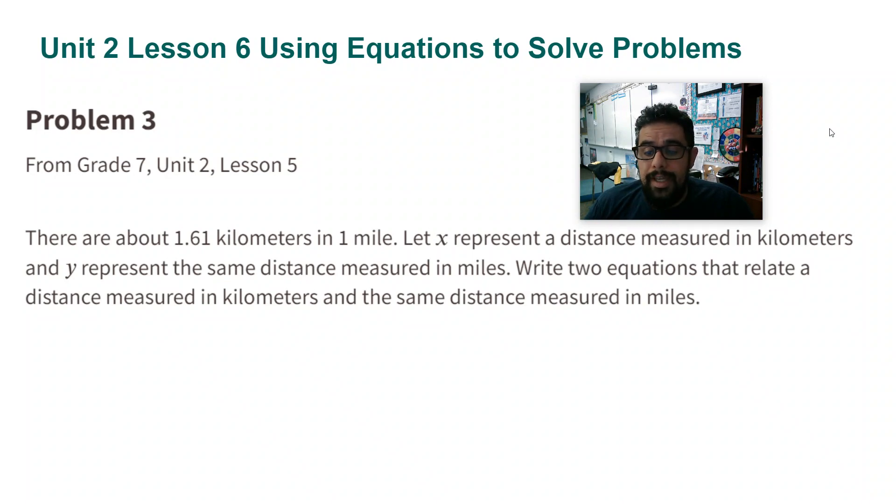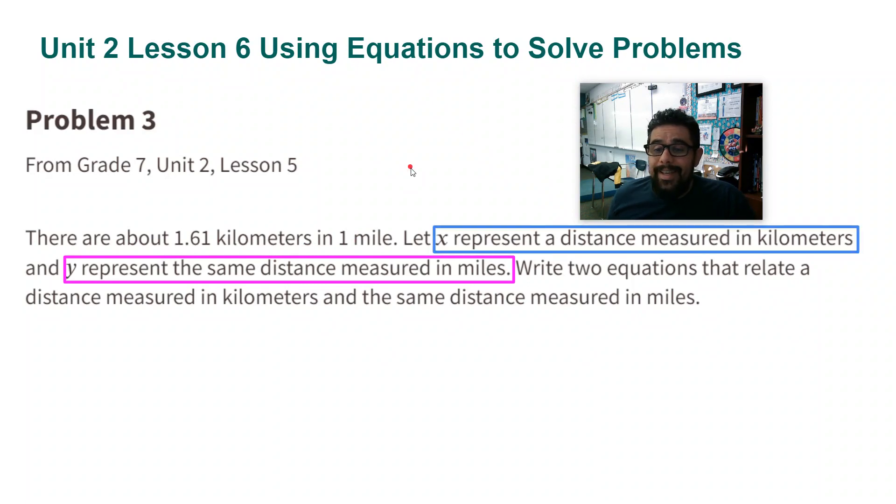Okay, so here we're taking what we learned in Lesson Number 5, how we have two equations for every relationship. Important parts here: y is going to be the distance in miles, x is the distance in kilometers. So we're going to use our rate here: 1.61 kilometers is 1 mile.